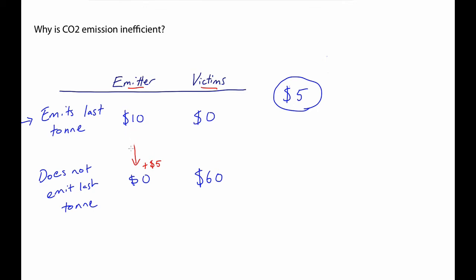But there's no reason why the victims should stop at merely offering $5. Remember, to them, it's worth $60 to stop us emitting that last tonne. So they might offer much more. They might offer $30, say.